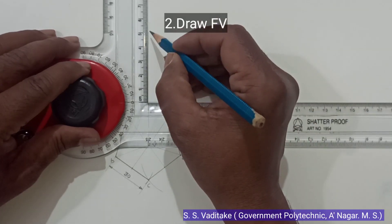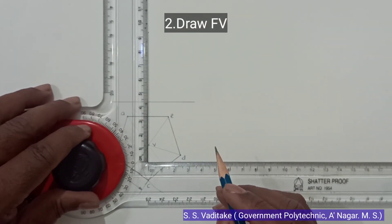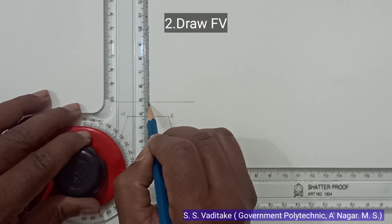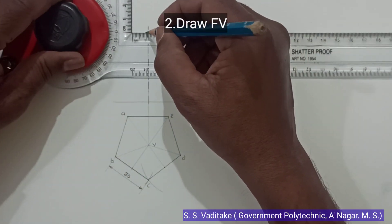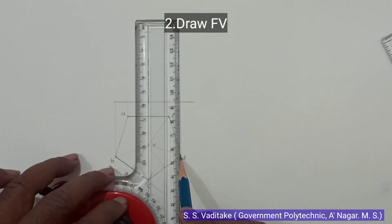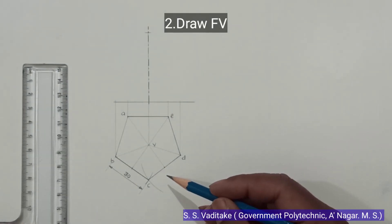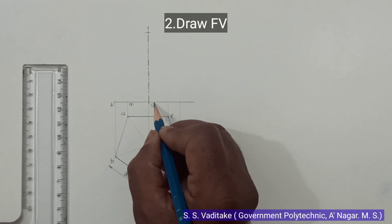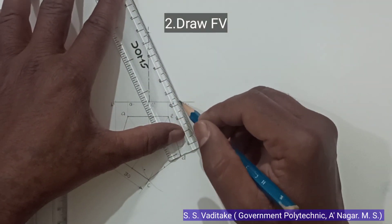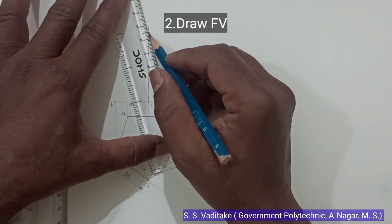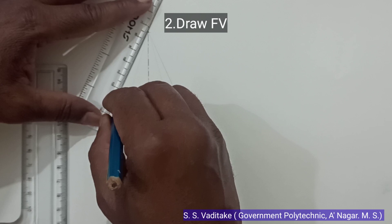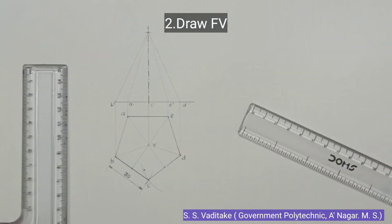Now draw the front view. The axis length is marked. Now to draw the projections, or to draw the front view, project all the base points from the top view to the front view. Label the base points with a single dash. Join all these base points with the vertex. The lines which we join with the vertex are called slanted edges, so draw the slanted edges.